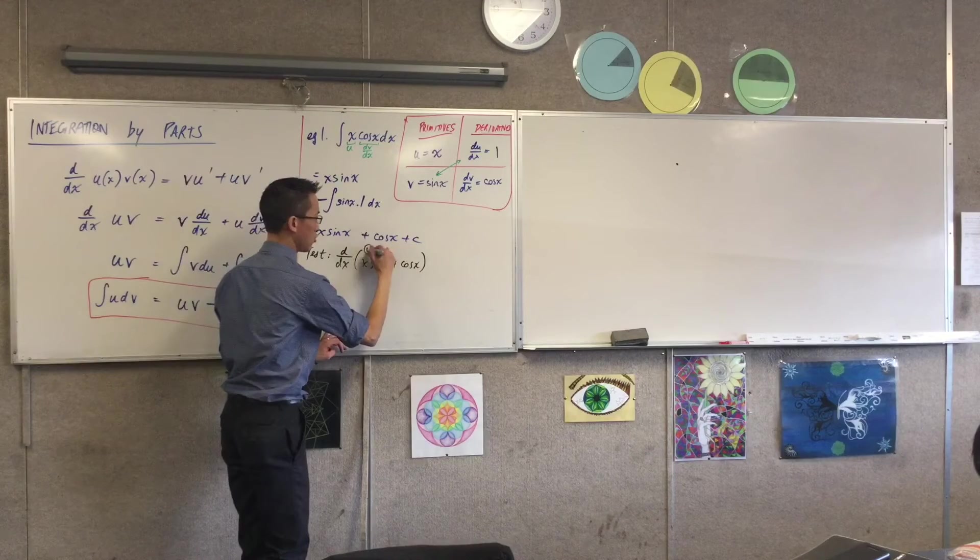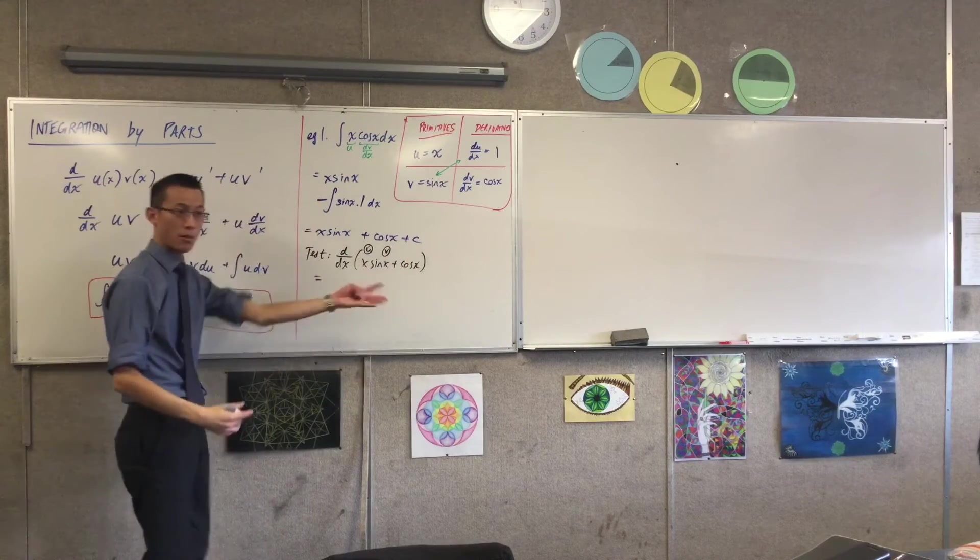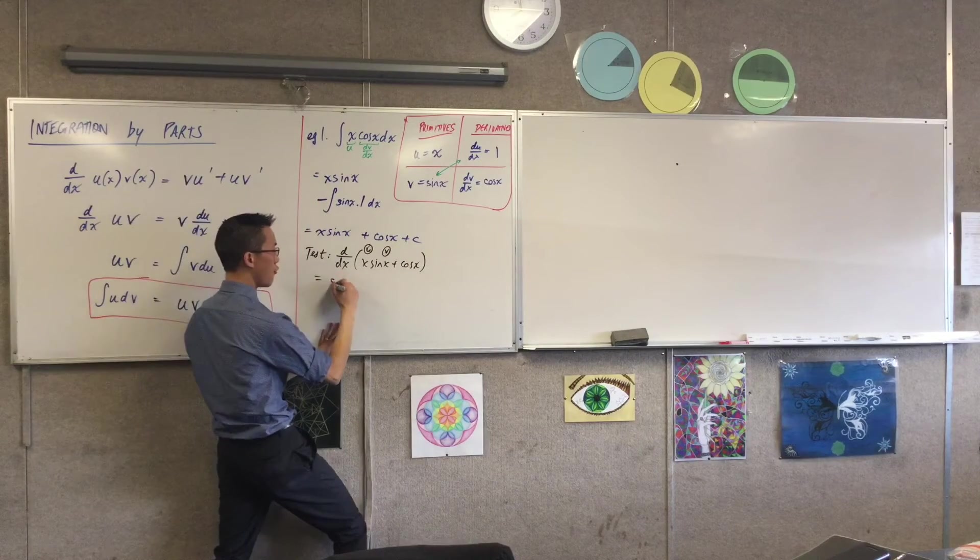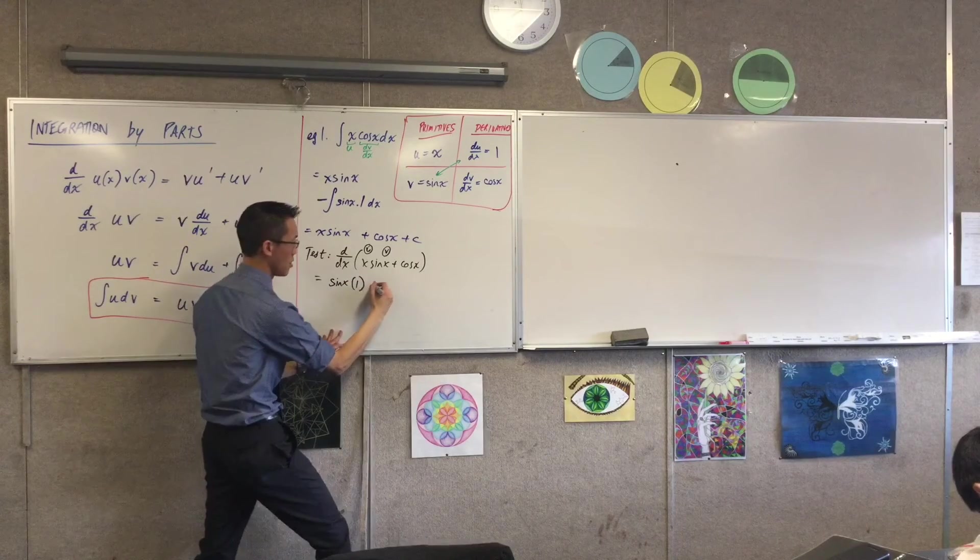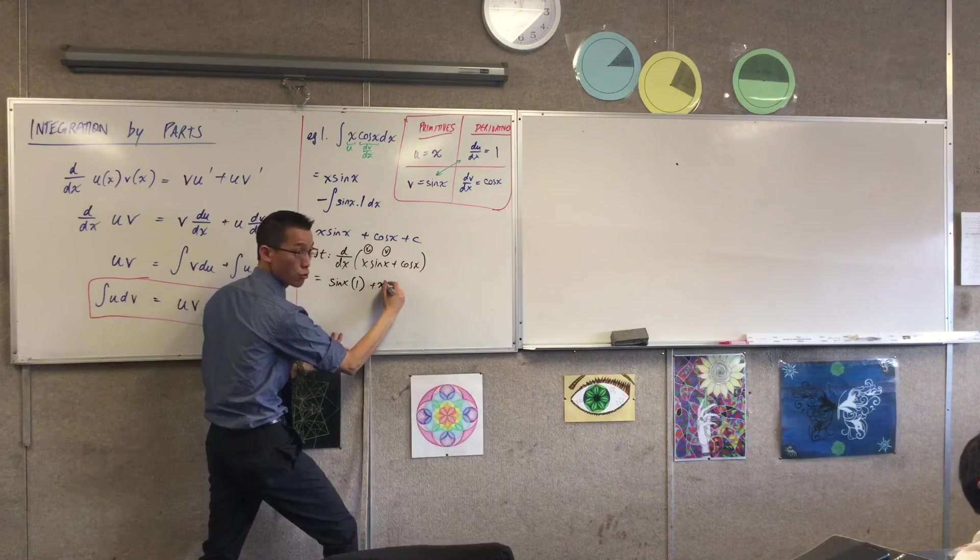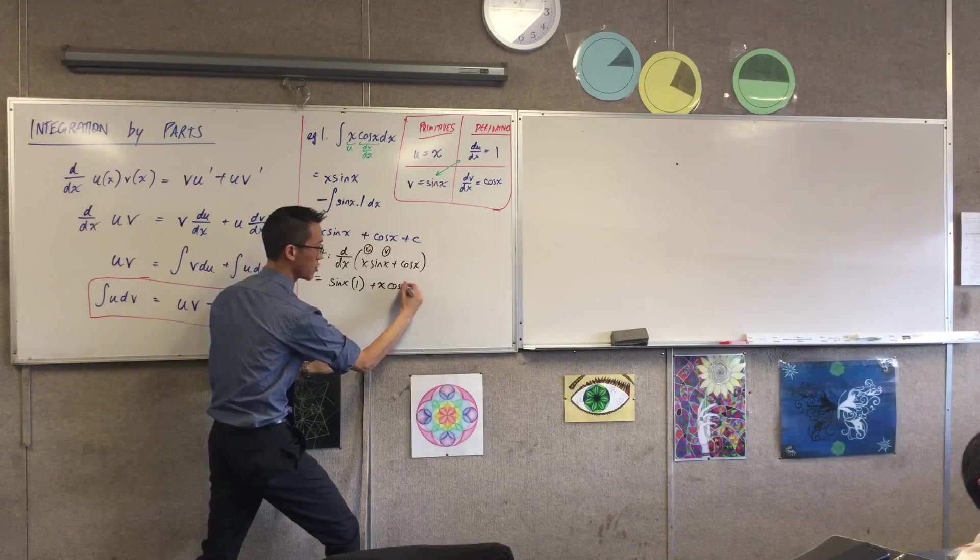What's the derivative of x sin x? Remember, I've got a product here, u and v. What are you going to help me read off? v, u dash, plus u, v dash.